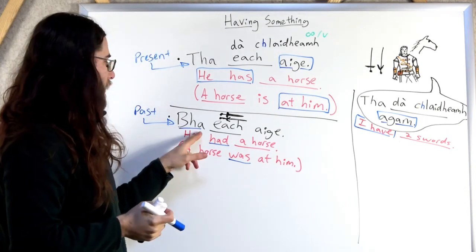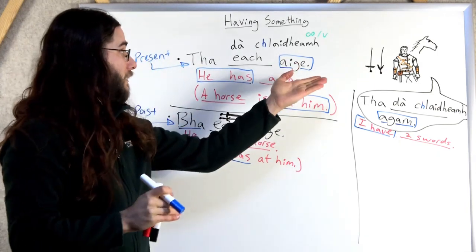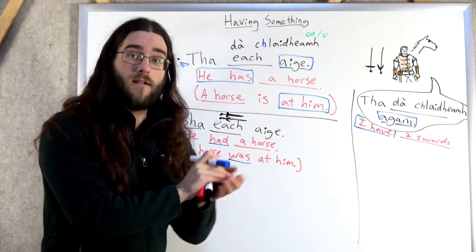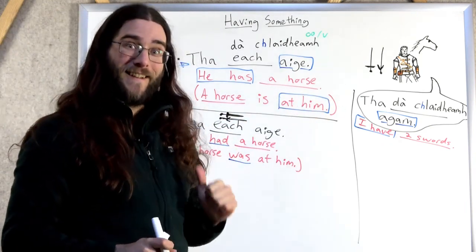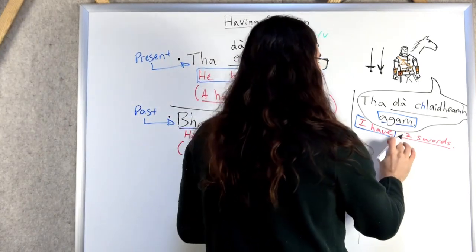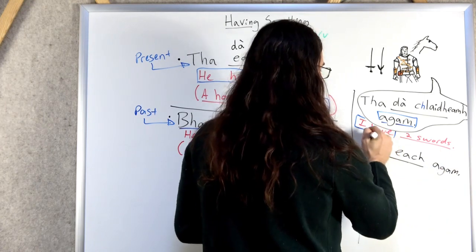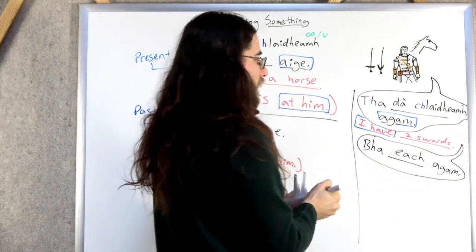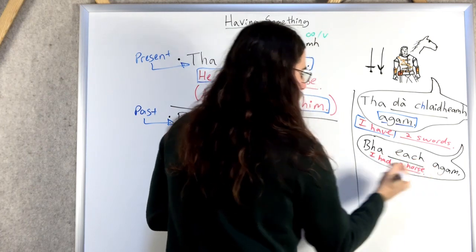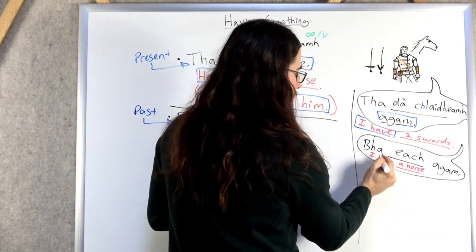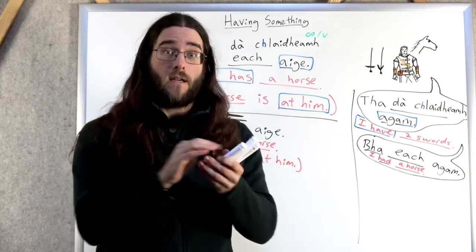Va. And if you're familiar with your, with some verbs in Gaelic, maybe you've come across Va already. Va means was. So there it is. A horse was at him. Va. Before, but now. Va. So what about from his perspective? Va. Va. Let's use roach again. Va ech akam. I had a horse. Va ech akam. I had a horse. Va ech akam. Akam means me. I have. Me. Akam. Glewa. Eke is he has.